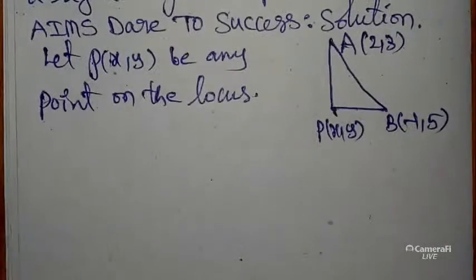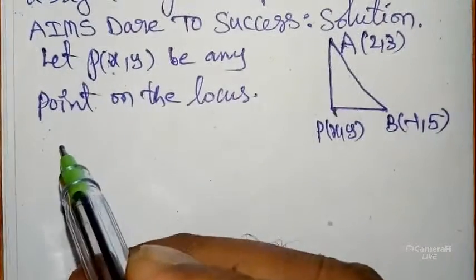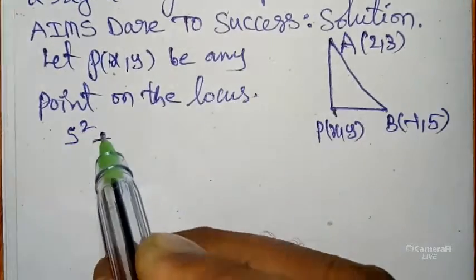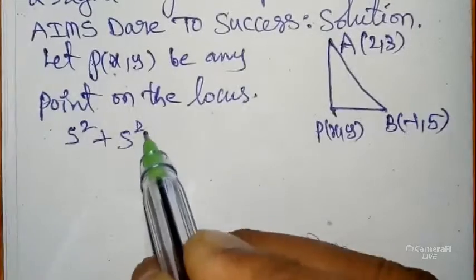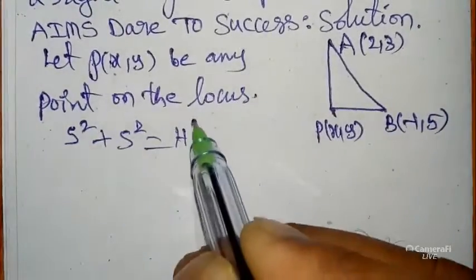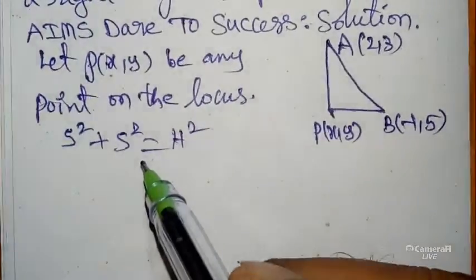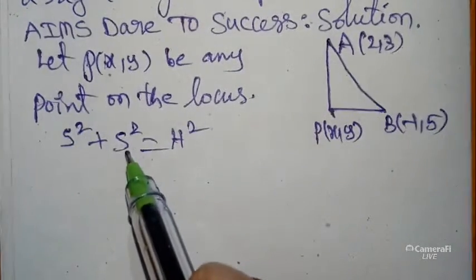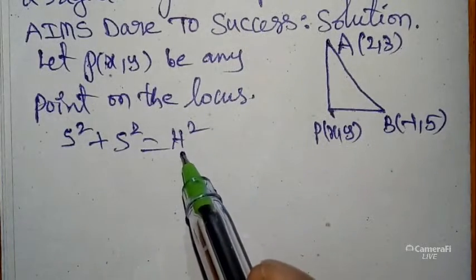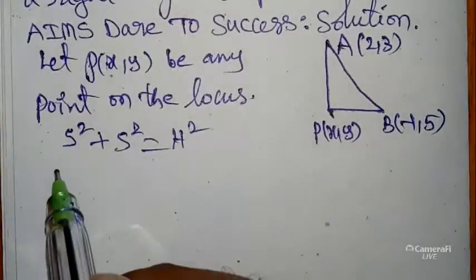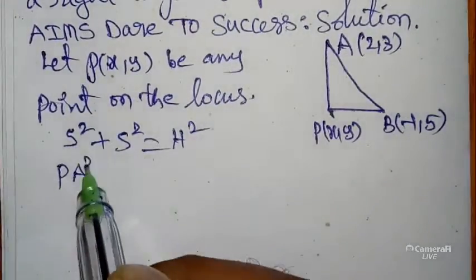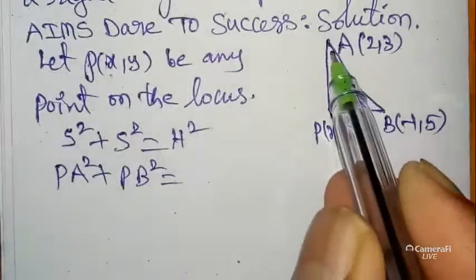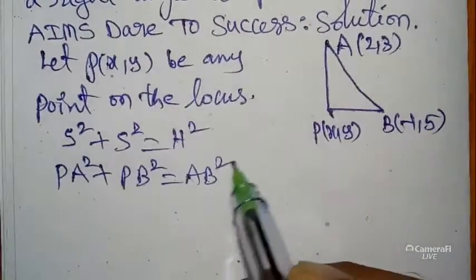Right angle means we use the Pythagoras theorem concept from 10th class: side² + side² = hypotenuse². So PA² + PB² = AB². Very easy concept — it is from 10th class only.